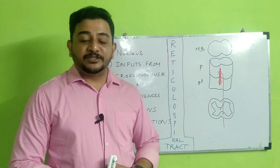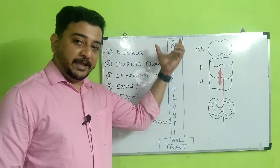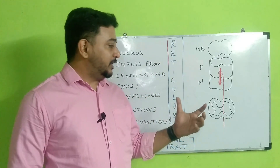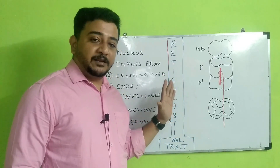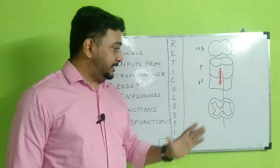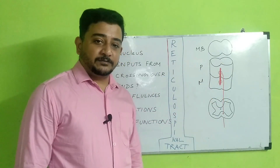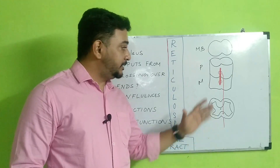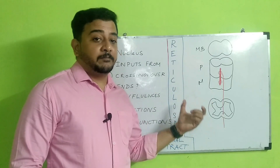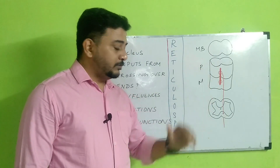Today we are going to see the reticulospinal tract. The reason I have written this in a vertical manner is because the reticular activating system is the one which gives rise to the reticulospinal tract. This reticular activating system is a collection of nuclei which has both gray matter and white matter, located in the center of the pons and the medulla.